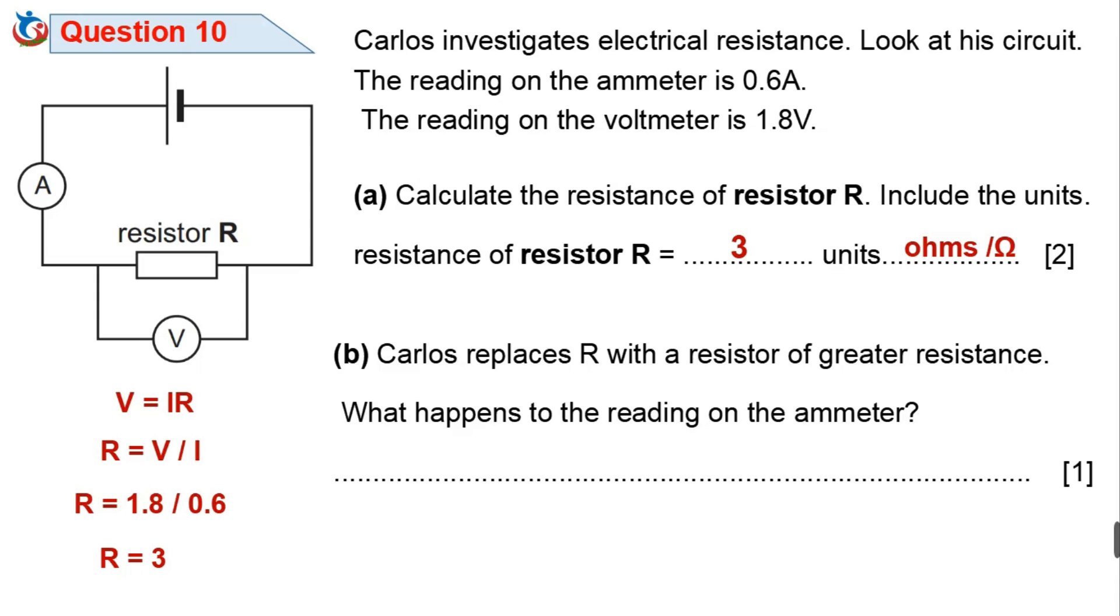Question 10b. Carlos replaces R with a resistor of greater resistance. What happens to the reading on the ammeter? R is replaced by greater resistance. When the resistance in an electric circuit increases, the amount of current in the circuit will decrease or get smaller. So the reading on the ammeter decreases when there is a greater resistance.